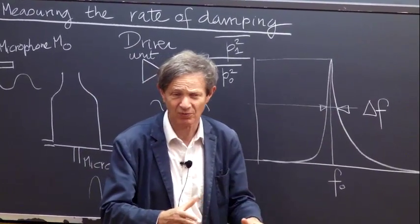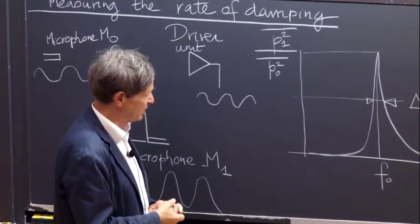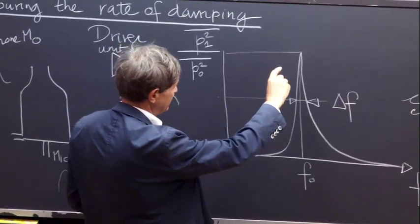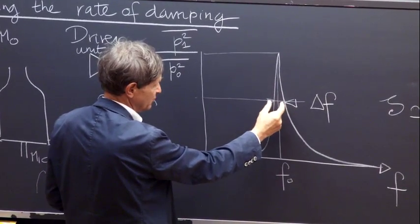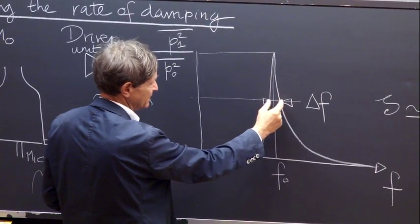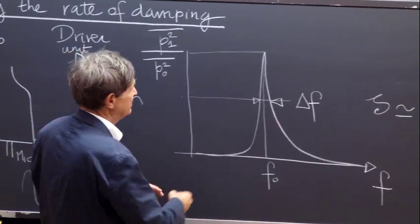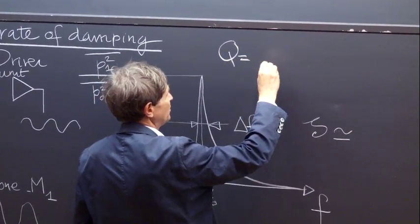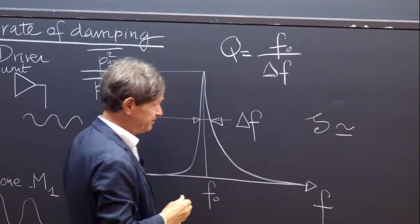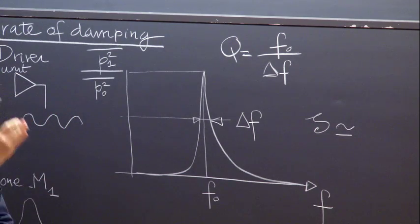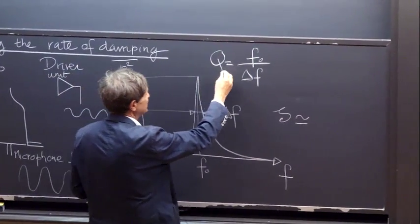What you learn in textbooks, what you've probably done in vibrations — this is typically what you can do here. If you take the position at half height and measure the bandwidth, you see this delta F. You can determine what is called the quality factor. The quality factor Q is equal to F0 divided by delta F.